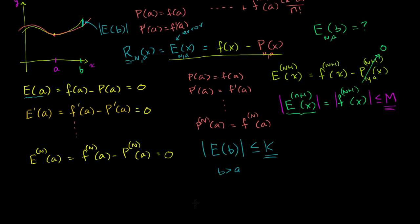What I want to do in this video is try to bound our error at some b — say it's less than or equal to some constant value — for some b greater than a. We saw a tantalizing result in the last video: the n+1th derivative of our error function equals the n+1th derivative of our function. So if we can bound the n+1th derivative of f over some interval containing b, we can bound the n+1th derivative of our error function, and then integrate to bound the error itself at b.